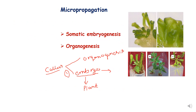In the technique of micropropagation, there are two pathways through which propagation of the plant can take place. The first is somatic embryogenesis, where embryos are directly produced on the explant or plant part giving rise to the new plant. The other pathway is organogenesis, where different organs are first formed and then the whole plant is formed.